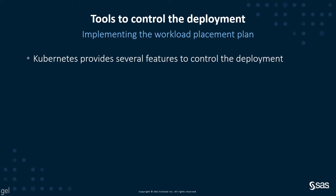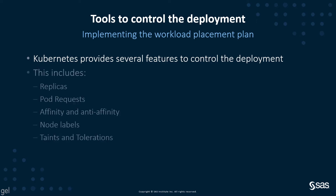In the last video, we talked about implementing a workload placement plan. Kubernetes provides several features to help us control the deployment. These include replicas, pod requests, affinity and anti-affinity, node labels, taints, and tolerations.